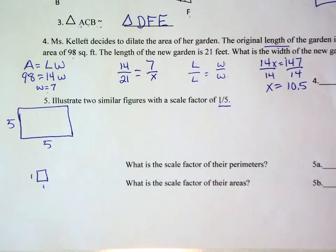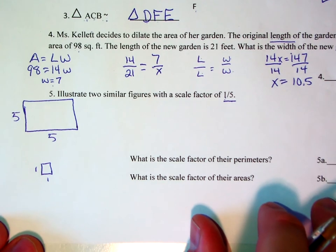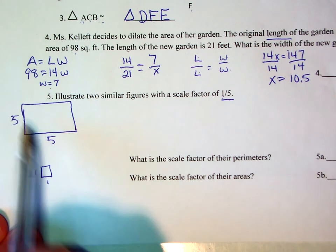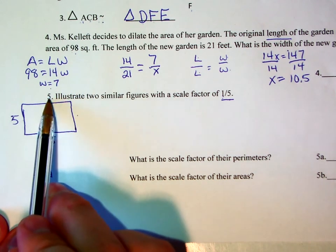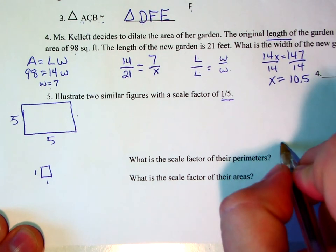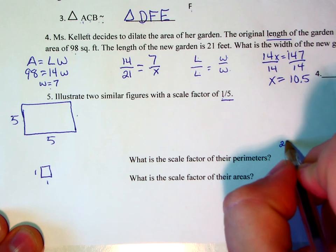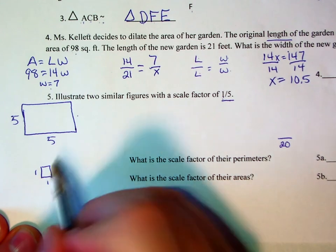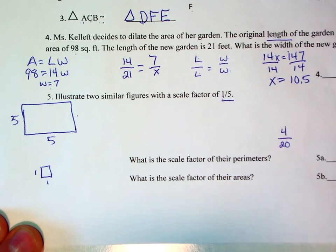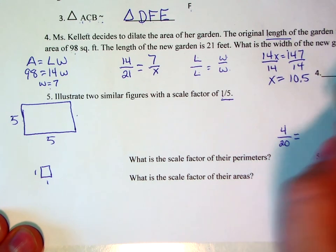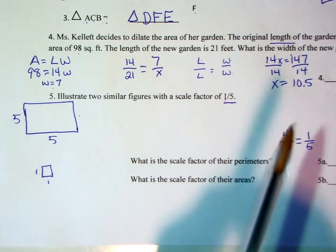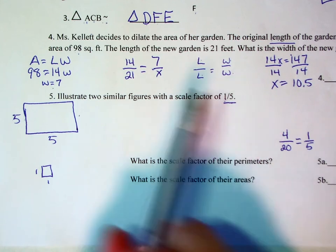We can then answer questions 5a and 5b. 5a, what is the scale factor of their perimeters? Well, in order to figure that out, I'm going to calculate the perimeter. 5 plus 5 is 10, plus 5 is 15, plus 5 is 20. 1 plus 1 is 2, plus 1 is 3, plus 1 is 4. And so we simplify the fraction. 4 twentieths is equivalent to 1 over 5. And so we see that the perimeter of two shapes will have the same scale factor.